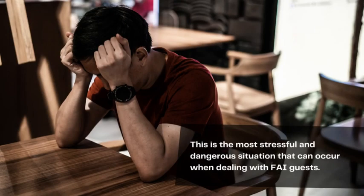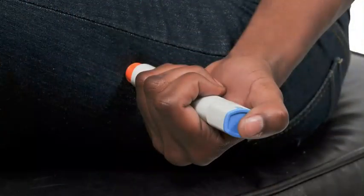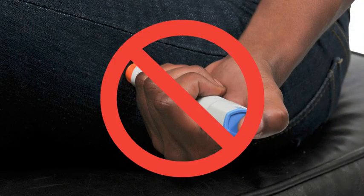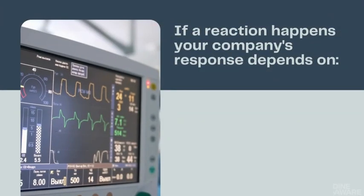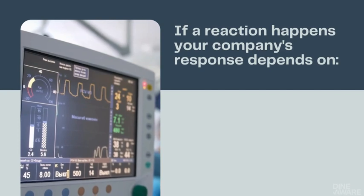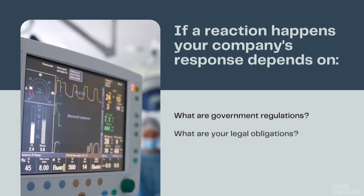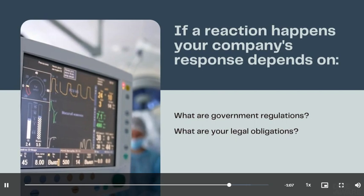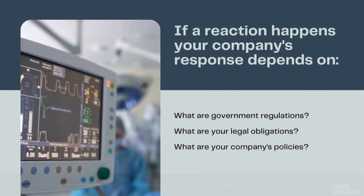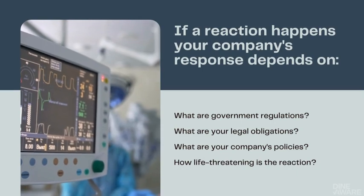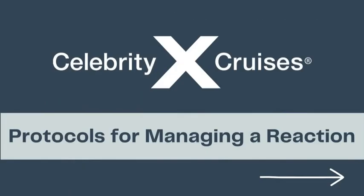Managing a reaction. This is the most stressful and dangerous situation that can occur when dealing with FAI guests — one that all involved want to avoid at all costs. If a reaction happens, your company's response depends on a number of factors: what are government regulations, what are your legal obligations, what are your company's policies, and how life-threatening is the reaction? In the event of a reaction, follow your company's emergency and incident procedures. Check with your manager if you do not know what they are. Most importantly, make sure you do know what they are before the next guest arrives at your workplace.